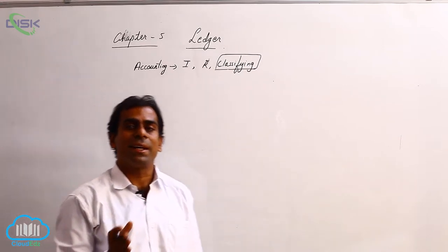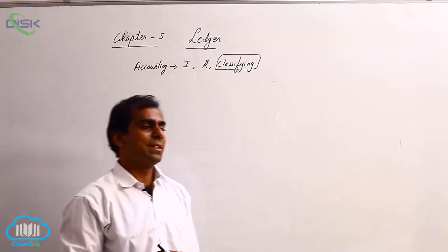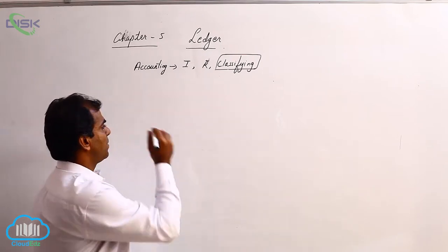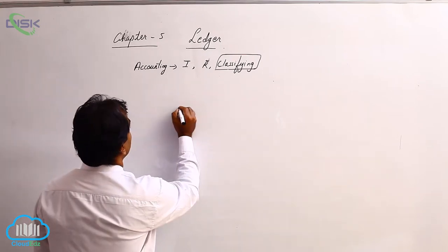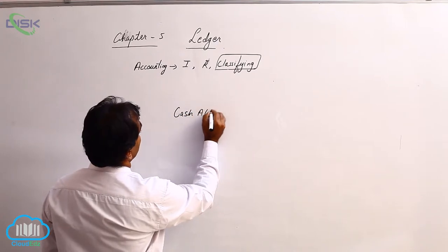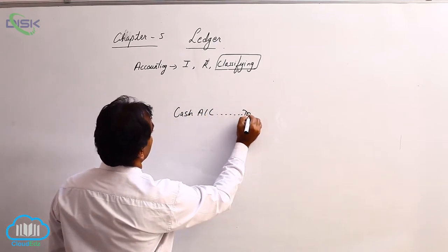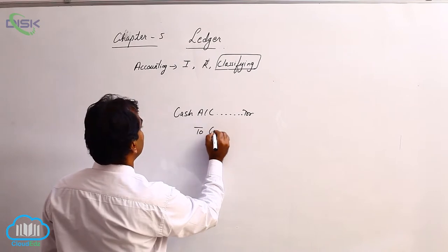Now once you have completed writing the journal entries, we say that let us take for example one journal entry. If I write my journal entry as cash account debit to capital account.